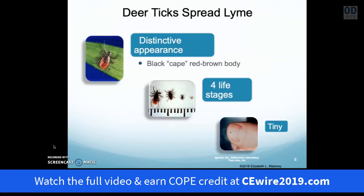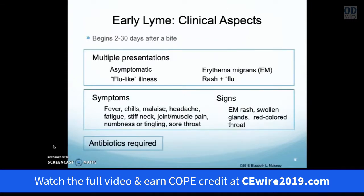Lyme disease is spread by deer ticks, which appear in the first picture with a black cape and red-brown body. They exist in several different stages of life, as shown in the second picture, and can be very small as shown in the last picture. They are often hard to find, especially when there are no rashes or other initial presentation of the tick bite.